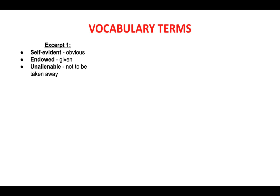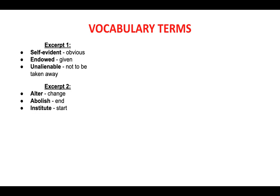For excerpt one: 'self-evident' means obvious; 'endowed' means given to you; 'unalienable' means it cannot be taken away. So we have three basic rights according to the Declaration of Independence that are unalienable — they cannot be taken away — and those are life, liberty, and the pursuit of happiness. For excerpt two: 'alter' means to change something; 'abolish' means to end it; 'institute' means to start something.